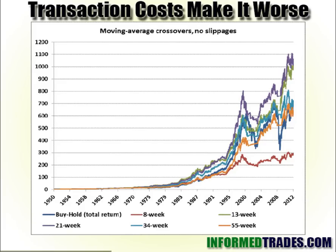Now does the strategy actually work? John Hussman is a blogger who tracks moving average crossovers in the S&P 500 going back to 1950. He compared various moving average crossovers versus a buy-and-hold strategy. What he found was that if you don't look at transaction costs, some of them certainly can outperform. The 13 week, which is the green line, and the 21 week, which is the purple line, can outperform a buy-and-hold, shown by the blue line. You clearly see significant outperformance on the 13 and 21 week relative to a buy-and-hold — the caveat being when you are not factoring in transaction costs.